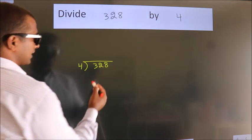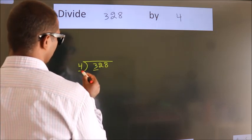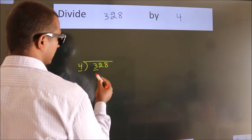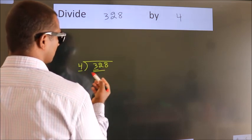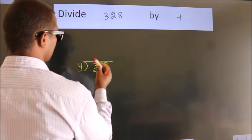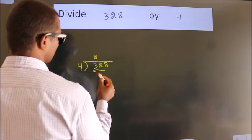Next. Here we have 3, here 4. 3 smaller than 4. So we should take 2 numbers, 32. When do we get 32? In 4 table, 4 8s, 32.